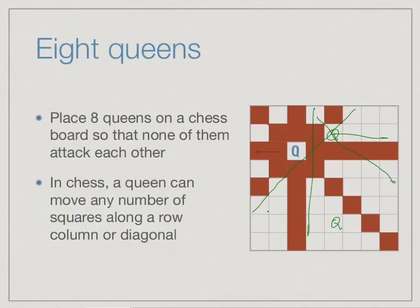Since the queen can move along these rows, columns, and diagonals, it can also capture any piece lying along them. The squares the queen can move to are said to be attacked by the queen. Our goal is to place queens so they don't attack each other. We can't place more than eight queens because there are only eight rows — if you place nine, two would share a row or column and necessarily attack each other. So eight is clearly the limit.